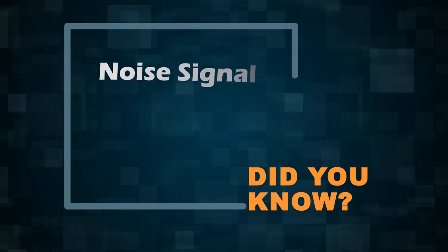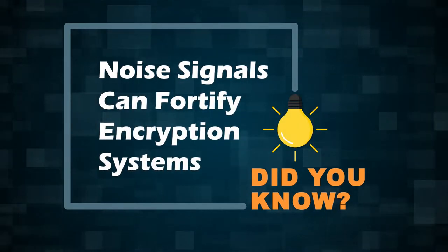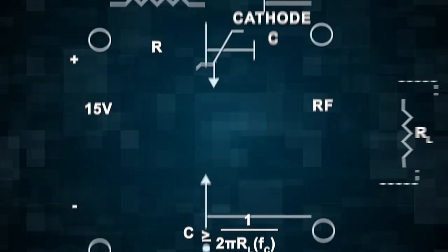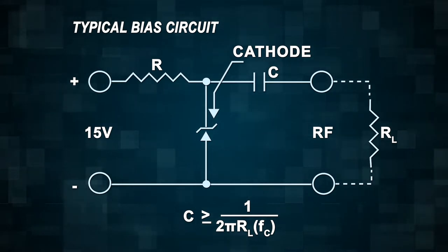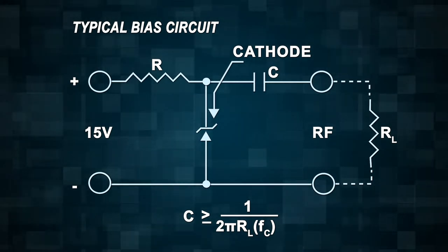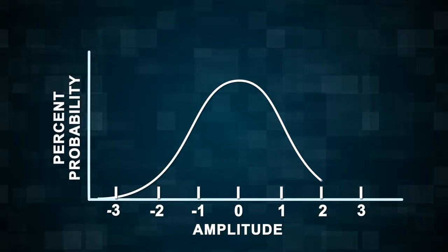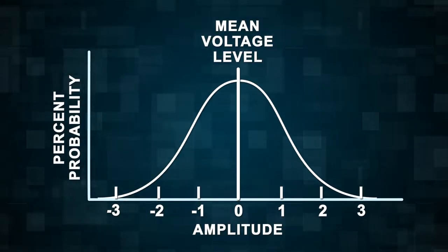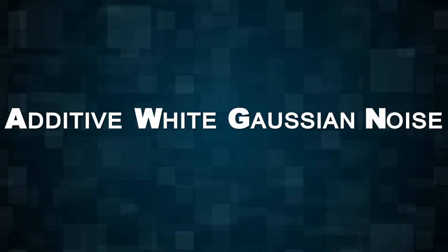Did you know that noise signals can fortify encryption systems? Noise sources use a Zener diode in a reversed bias circuit to generate random white noise with a constant power spectral density and a Gaussian distribution, referred to as additive white Gaussian noise waveforms.